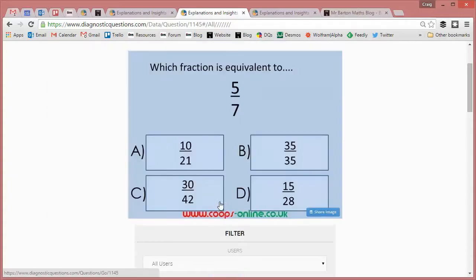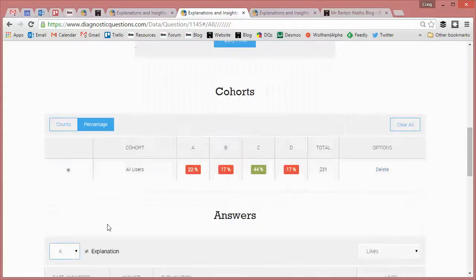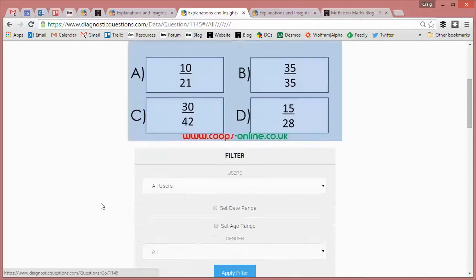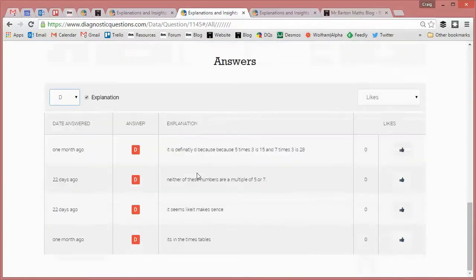It's a similar story with D actually. 15 over 28. If I choose D instead, you'll see from the students, look at this: 'It's definitely D because five times three is 15 and seven times three is 28.'